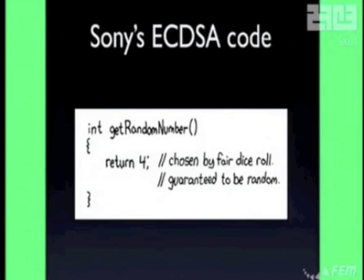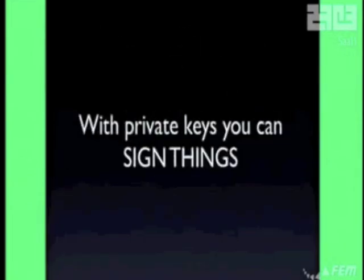And of course it's no secret: if you use the same m, you can calculate k once you have two signatures. And if you have k — that's the private key — and with a private key you can sign things.